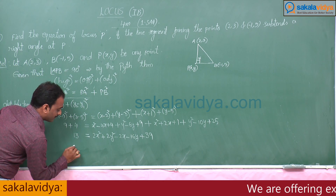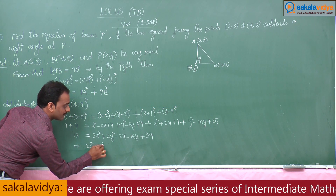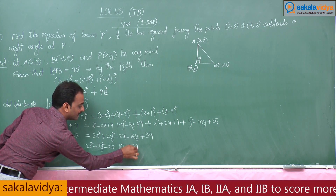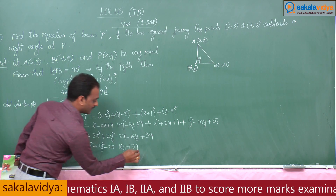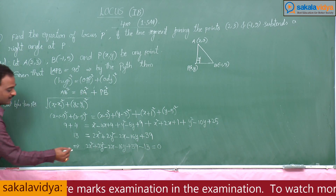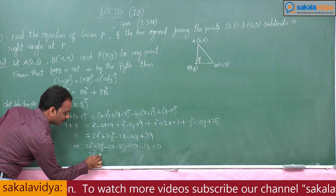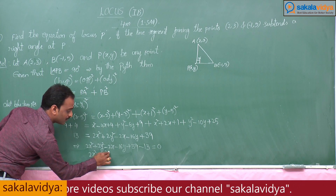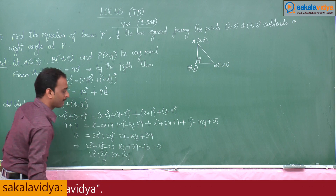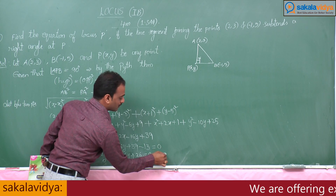Combining like terms: 2x squared plus 2y squared minus 2x minus 16y plus 39 minus 13 equals 0, which gives 2x squared plus 2y squared minus 2x minus 16y plus 26 equals 0. Taking 2 as common gives the simplified equation of the locus.